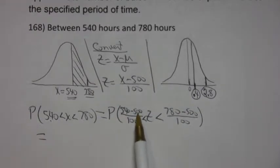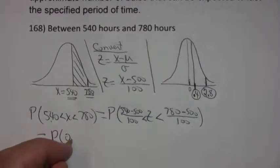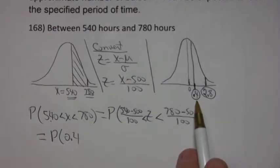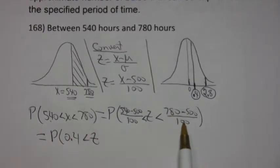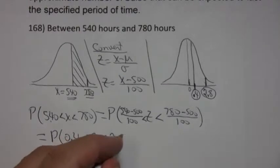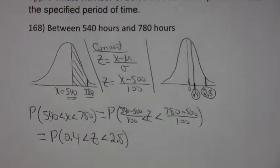And then to convert 780, you take the mean away and divide by the standard deviation. And as I said, 540 minus 500 is 40, and 40 divided by 100 is 0.4. That's just what I got up here when I did it in my head. And 780 minus 500 is 280. 280 divided by 100 is 2.8. Again, I've done that in my head already. So a lot of this stuff, if you know what you're doing, you can just jump straight to it.